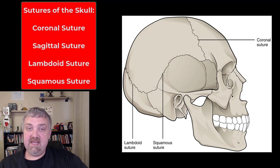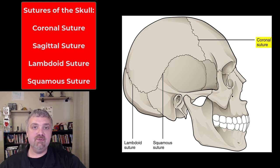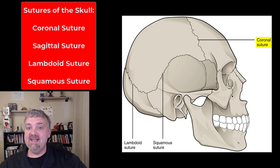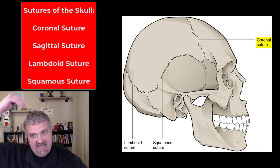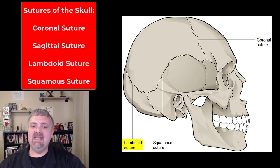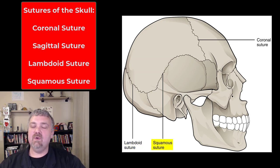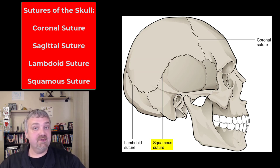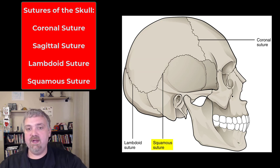These are the sutures. The coronal suture connects the frontal bone to your two parietal bones. The sagittal suture connects the two parietal bones right in the middle. The lambdoid (or lambdoidal) suture connects the parietal bones to the occipital bone. The squamous (or squamosal) suture connects the temporal bone to the parietal bone. Notice that every suture is connecting the parietal bone to at least one other bone.